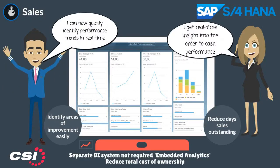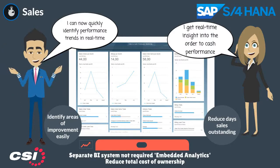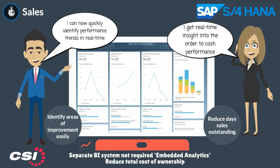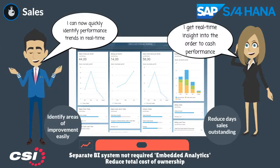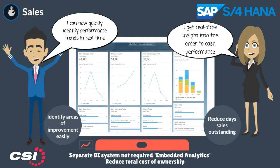The embedded order-to-cash process performance monitor in S4HANA provides predefined performance KPI overviews based on real-time transactional data. S4HANA provides a flexible analytics framework for embedded analytics, allowing sales managers to quickly identify performance trends, increasing efficiency and performance optimisation through easier identification of bottlenecks and areas of improvement.